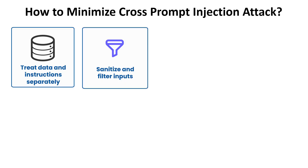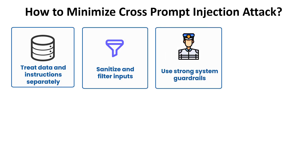Second, sanitize and filter inputs: scan inputs for instruction-like patterns or malicious phrases, and remove or flag content such as 'ignore previous instructions' or secret-revealing commands. Third, use strong system guardrails: pre-pend clear refusal instructions in prompts to ignore embedded user commands, and enforce these rules programmatically to ensure compliance with system policies.